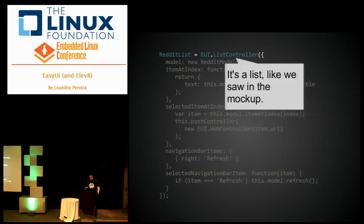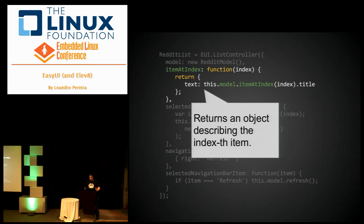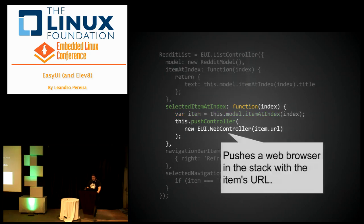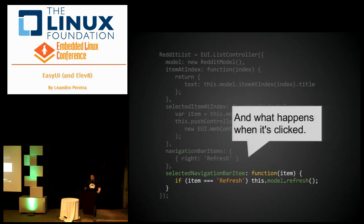For the controller, as you saw earlier, it's a list, so we derive from list controller. We use the model we wrote five minutes ago and write an item-at-index function. This gets the model, obtains the item, and returns an object saying the text for this item is the title for that item — the title came from the parsed JSON. Whenever you select an item, it obtains the item itself and pushes on top of your screen a web browser with that item's URL. And of course you'd have a refresh button — you just say in the navigation bar I have a refresh button on the right, and whenever you click it you just refresh the model.